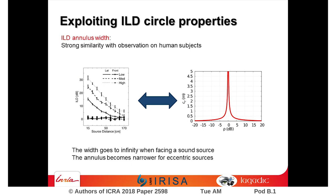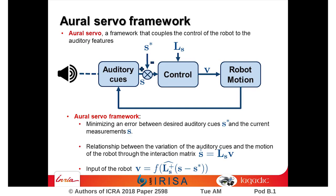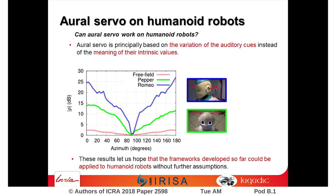We exploit this property through a sensor-based control framework. This is a closed-loop control that generates a motion to minimize an error between the current ILD measurement and a desired ILD value. This approach is based on ILD variation and can be applied independently on free-field microphones or head-mounted systems, as the ILD variation remains the same in both setups.